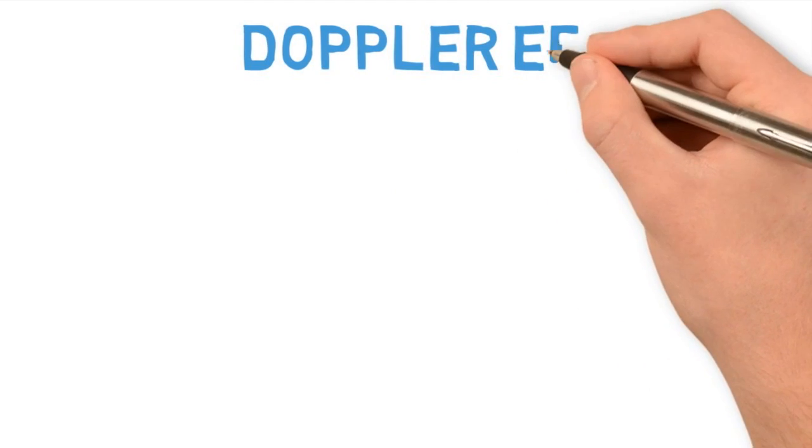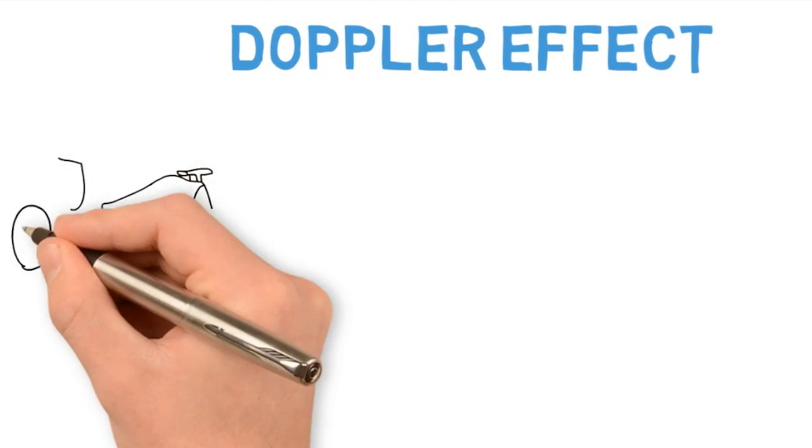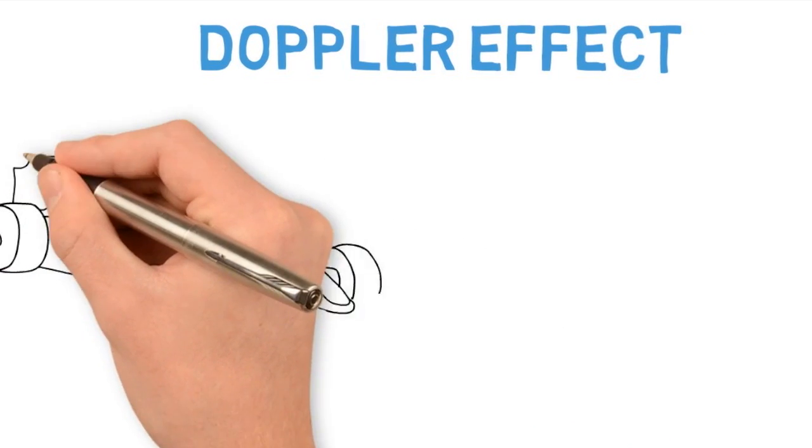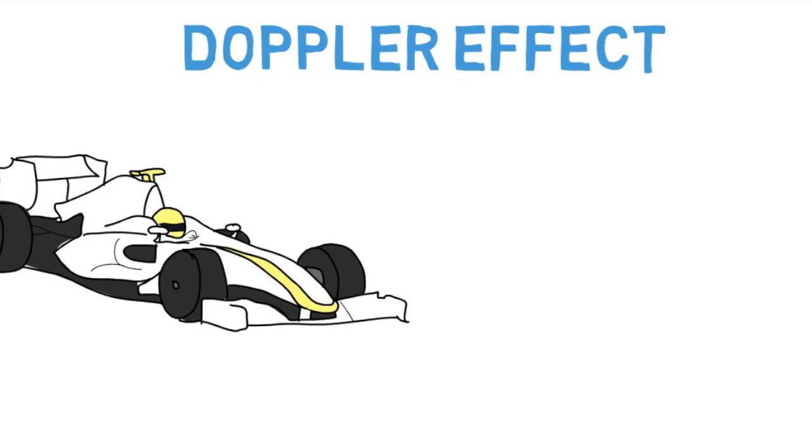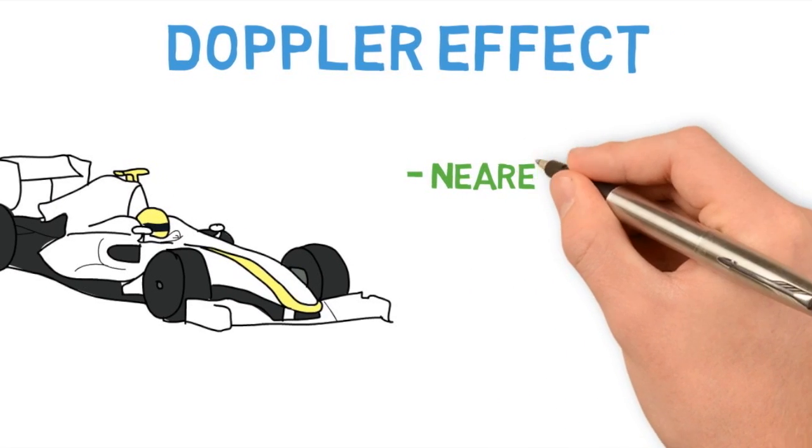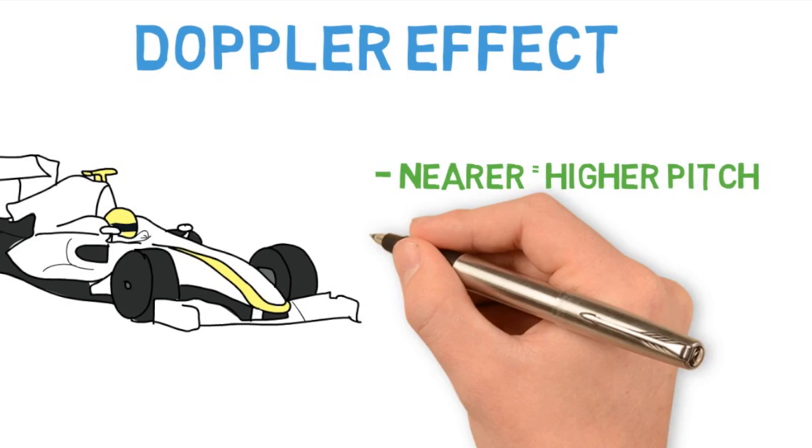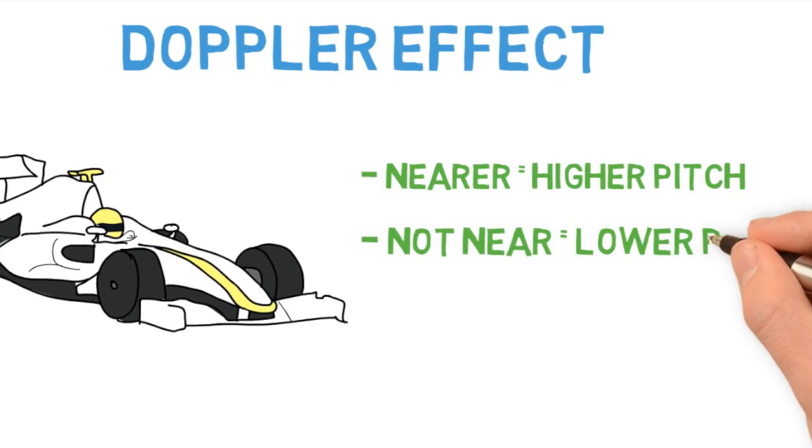Have you ever noticed when listening to a Formula One car or a passing ambulance or a police car with its siren on, as it gets nearer the sound of its engine is at a higher pitch, and when it passes and disappears its sounds are at a lower pitch? If you haven't, here's exactly that.